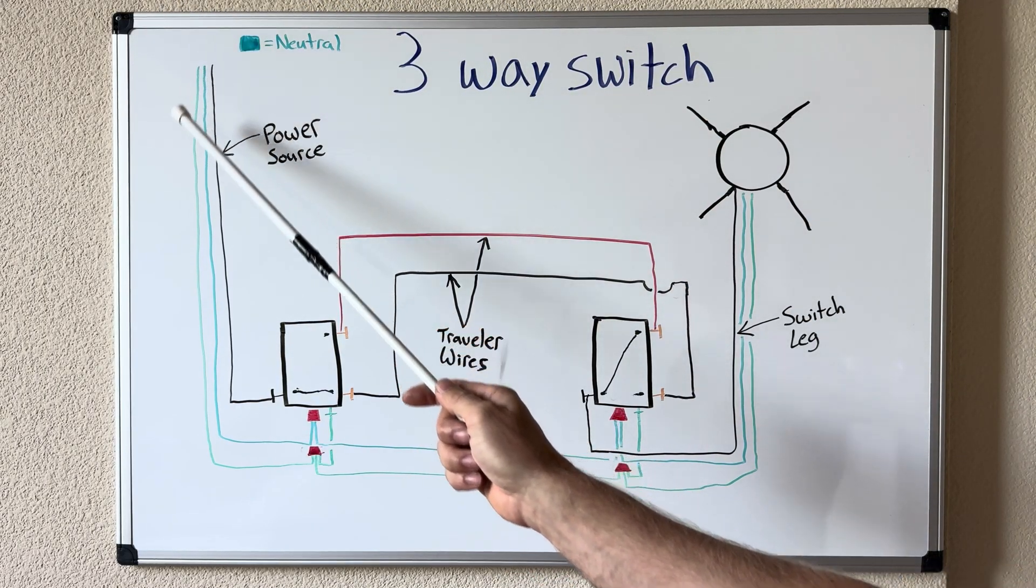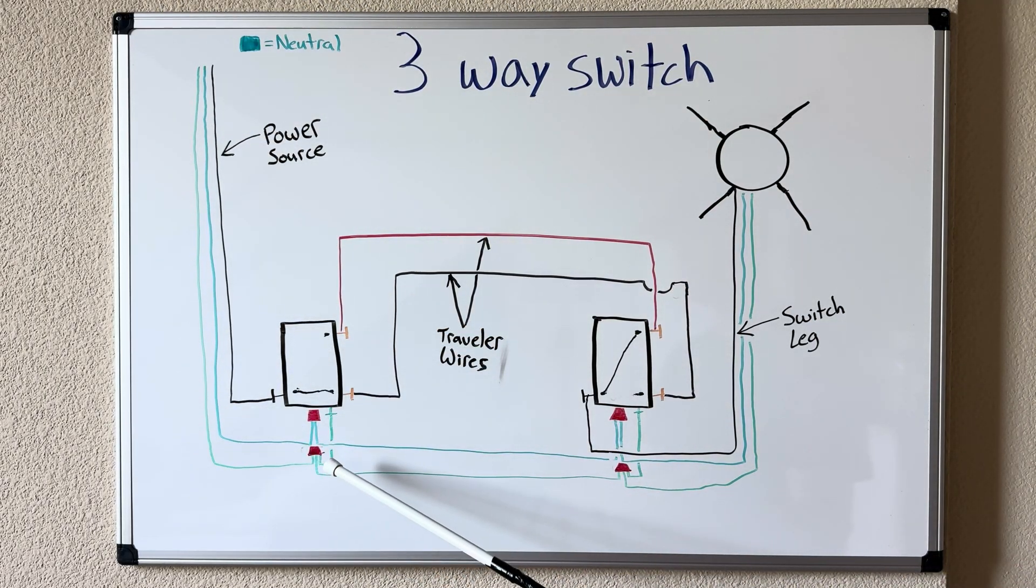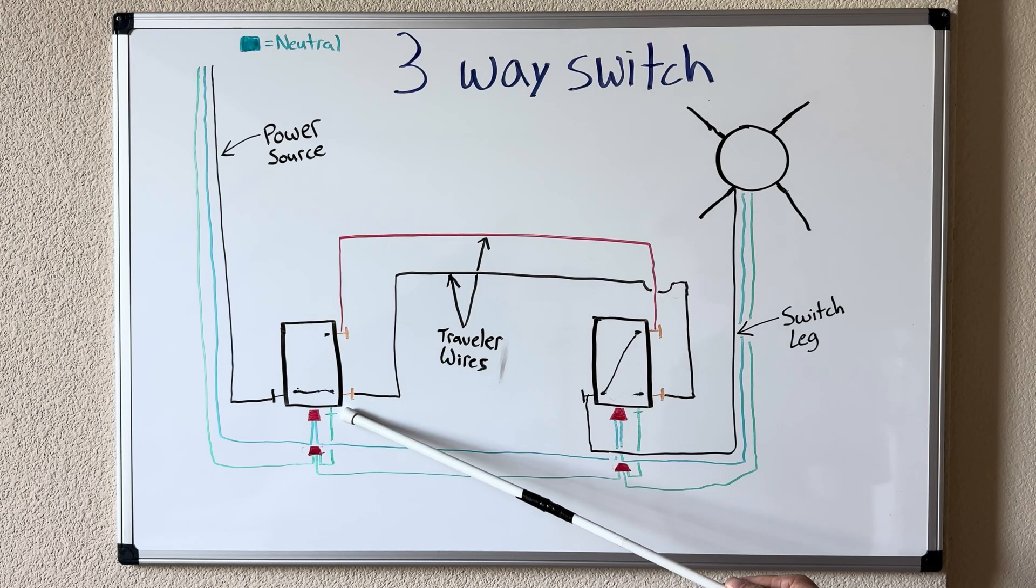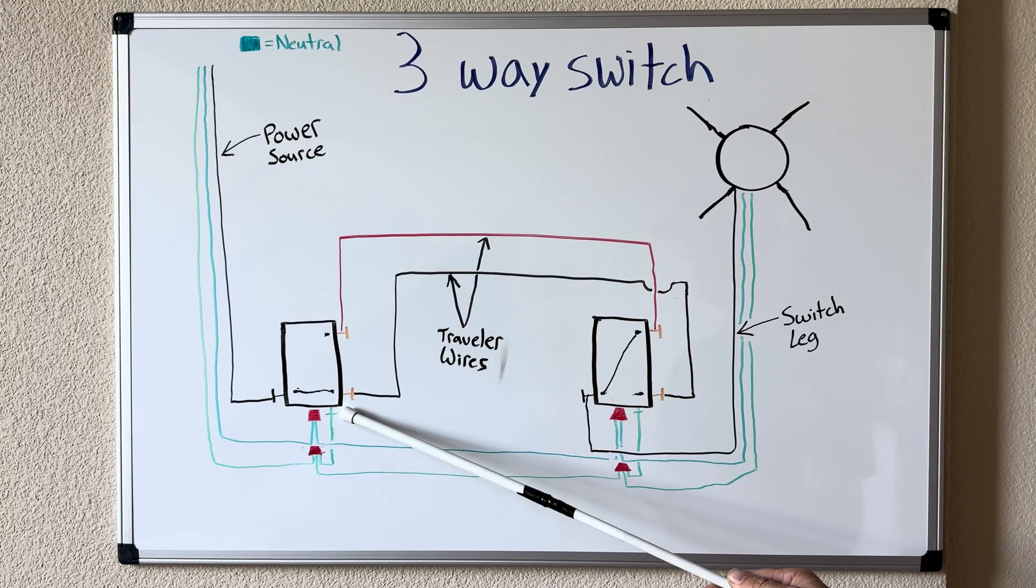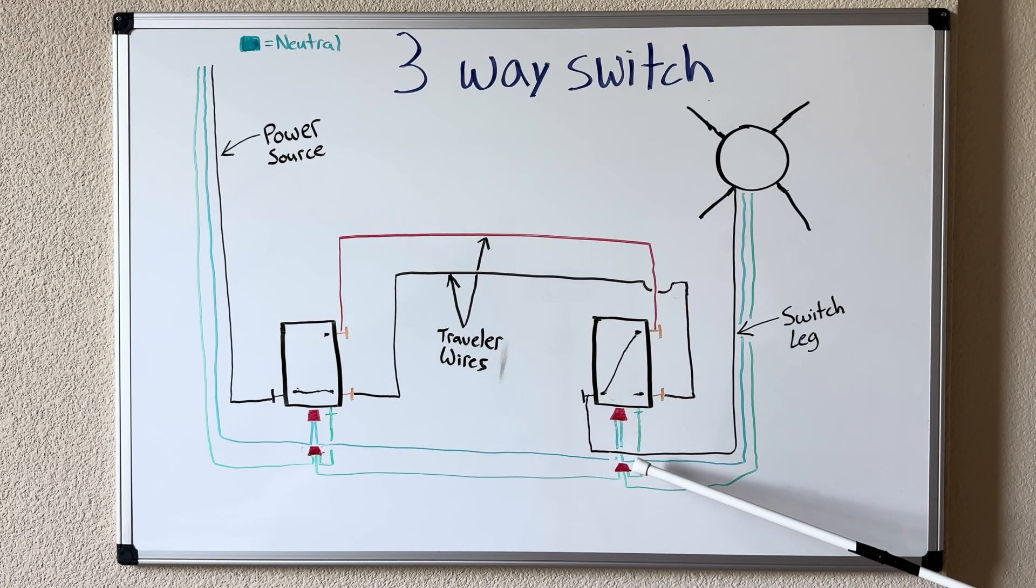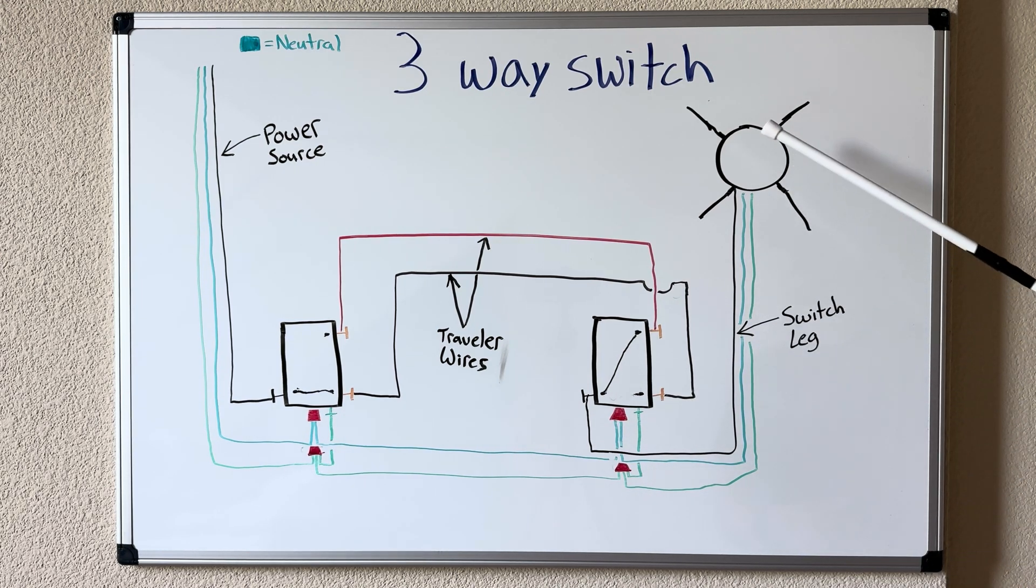And lastly I've added in our ground wire which is going to get spliced and pigtailed at each device location and then hooked up to the device on the green screw indicated on the bottom of this switch over to the next switch location under the wire nut spliced and pigtailed to the green screw on this switch and then it comes out of that wire nut all the way up to the light.